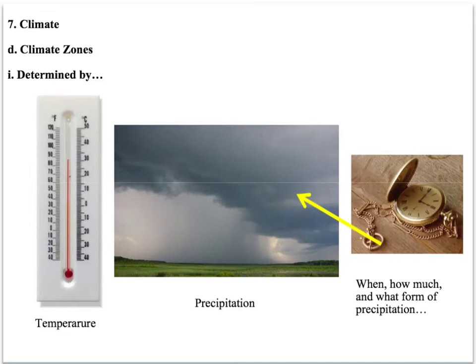Climate zones are determined by temperature — the air temperature — precipitation, and it's not just how much rain you get, it's when does the rain come. Does it come throughout the year? Does it come just for a month or two? How much precipitation, water, and in what form? Snow, rain, and so on.